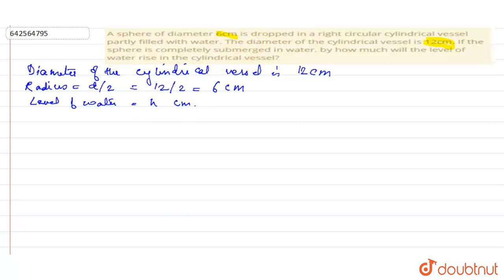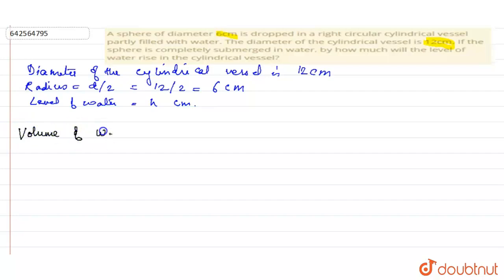Now, the volume of the water displaced is equal to the volume of the sphere, because even if an object changes shape, the volume remains the same. So we write: volume of water is equal to volume of sphere.